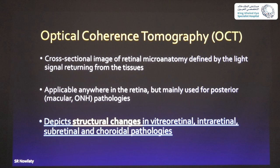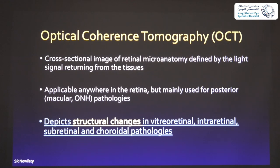So what is optical coherence tomography? It's a very useful exam. It's a cross-sectional image of the retinal microanatomy that's defined by how light traverses the tissues. Light hits the tissue, comes back, and we see that on a frame. It's applicable really anywhere in the retina, but we mostly use it in the posterior pole, at the macula, but also at the optic nerve. You can do OCT anywhere in the retina — it will give you an idea about the pathology, the histology of a tissue.